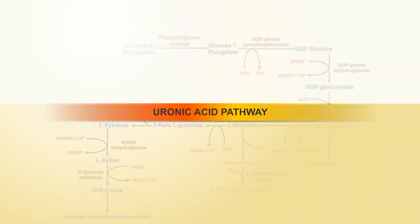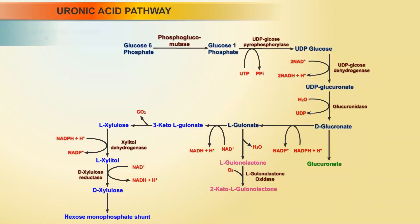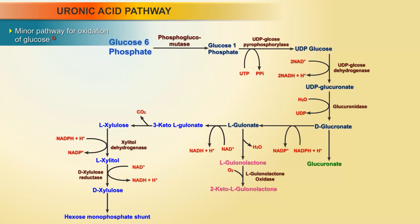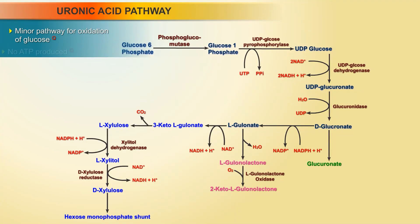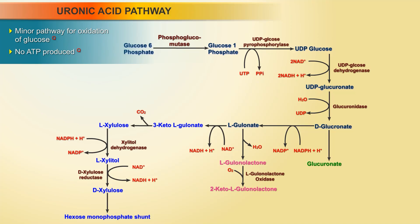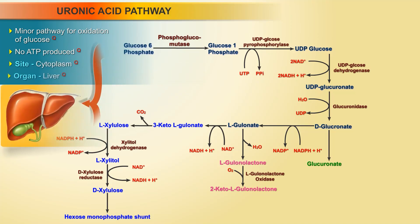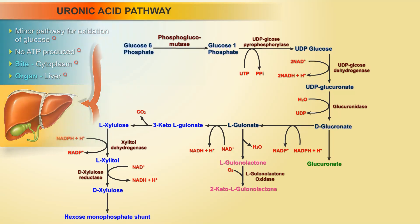Uronic acid pathway. It is a minor pathway for oxidation of glucose. It starts from glucose-6-phosphate. No ATP is produced. The site is the cytoplasm and the organ is the liver.